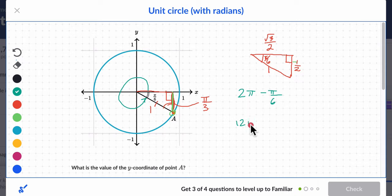2 pi is the same as 12 pi over 6. Minus 1 pi over 6. You have 12 pi. You take 1 pi away. 12 minus 1 is 11. It's 11 pi over 6. And that's the angle we're dealing with.